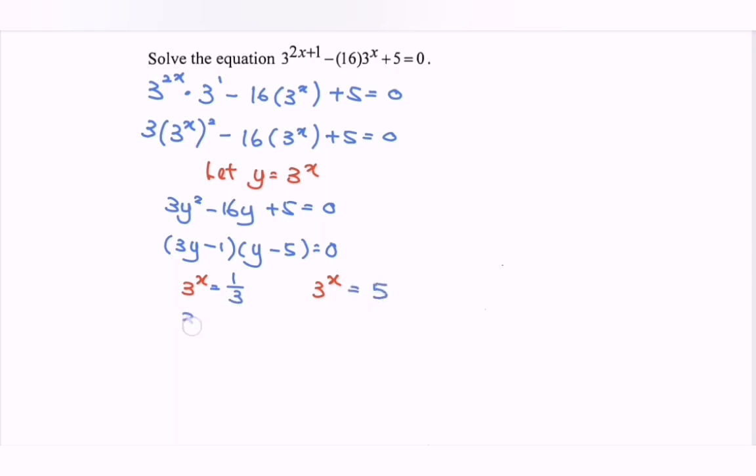Rewrite: 3 to the power of x equals 3 to the power of negative 1. Since we have the same base, we can compare and x equals negative 1.